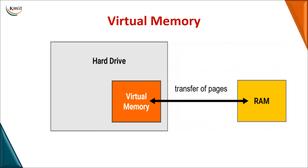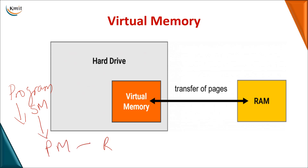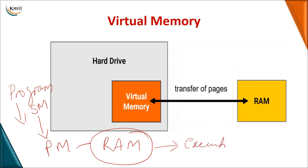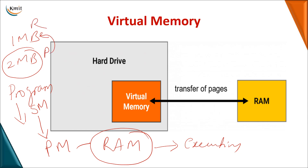We know that when you want a program to be executed, the program will initially be in secondary memory and from there it must be present in physical memory — the RAM. When a program is present in RAM it can be executed. Now if your program size is 2MB but your physical memory is only 1MB, you cannot dump the entire 2MB process into the available RAM, so there is no possibility of executing that program directly.